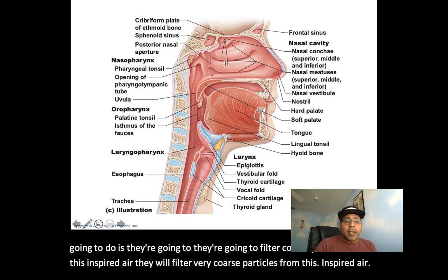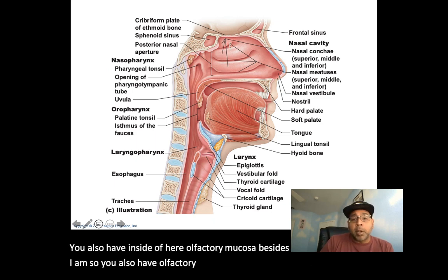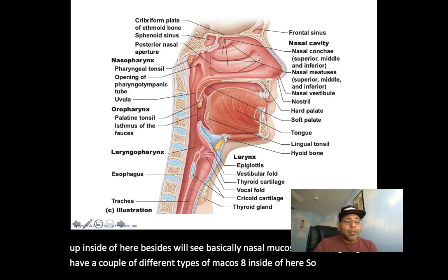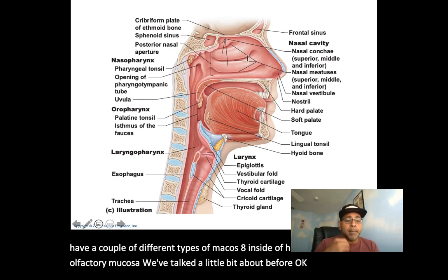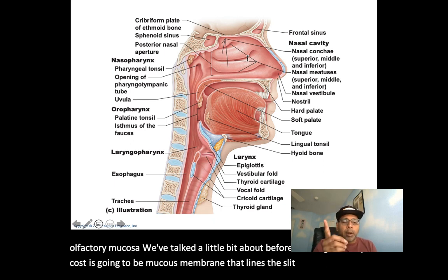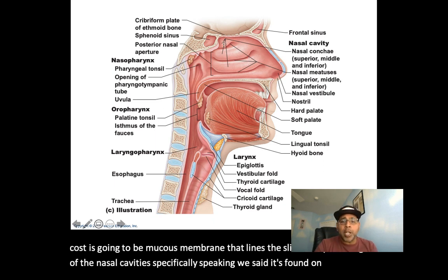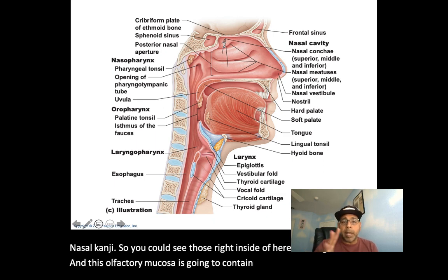Inside the nasal cavity there's also olfactory mucosa and nasal mucosa. The olfactory mucosa is a mucous membrane that lines the slit-like superior region of the nasal cavity — specifically found on the superior nasal conchae. This olfactory mucosa contains your smell receptors. Also inside is the respiratory mucosa, which is made up of pseudostratified ciliated columnar epithelium with scattered goblet cells resting on a lamina propria richly supplied with mucous and serous glands, producing mucous and watery fluid containing enzymes.